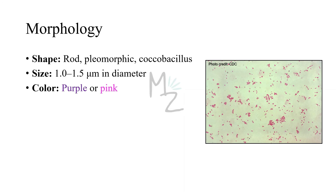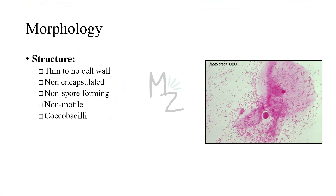Morphology. Gardnerella vaginalis is a rod-shaped bacterium. It is pleomorphic and it is a coccobacillus. 'Pleo' means many and 'morph' is for shape, so this bacterium has different shapes. Coccobacillus refers to circular and rod forms. Gardnerella varies in size from 1 to 1.5 micrometres. It is purple or pink in color — older organisms tend to lose their gram-positive cell wall, which is why they appear gram-negative on gram staining.